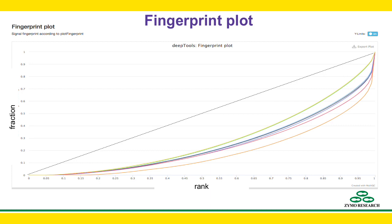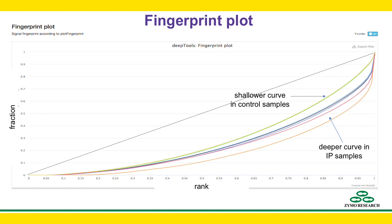Another way to evaluate ChIP-seq quality is using what is called a fingerprint plot. The idea behind this plot is very simple. If we divide the genome into many small bins, count and sort the bins by the number of reads in them, then plot the cumulative fraction of reads by rank, you get this plot. If reads are perfectly evenly spread across all bins, you get a plot like this imaginary black line. A good ChIP-seq experiment should have reads very enriched in some regions, so you'll get a very deep curve. For control samples, you should have a shallower curve because their reads should be more spread out. A good separation between your IP and control samples indicates a good ChIP-seq experiment.